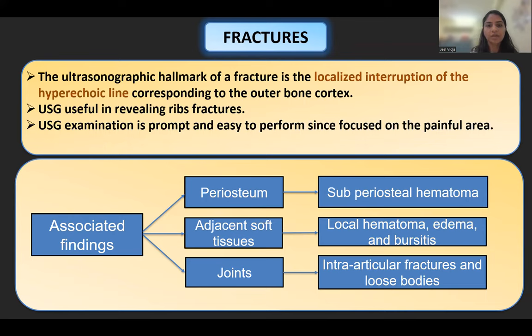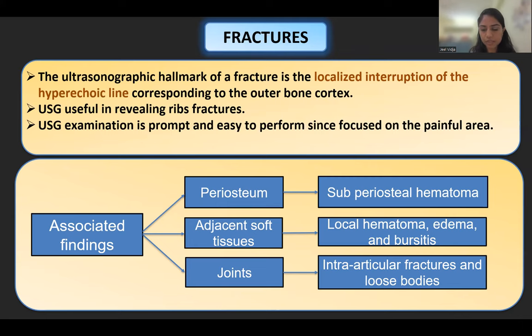The associated findings with rib fractures include periosteal hematoma formation. In the soft tissue, there is hematoma formation, edema, and bursitis. In the joints, there may be intra-articular fractures and loose bodies.